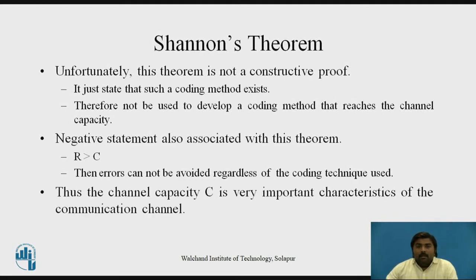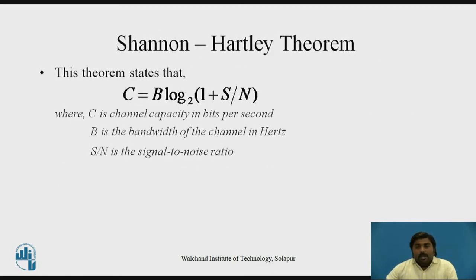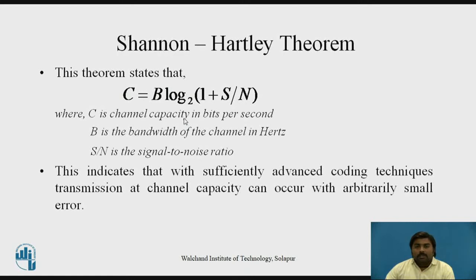To overcome that, we have the Shannon-Hartley Theorem, which states that C equals B log base 2 of (1 + S/N), where C is the channel capacity in bits per second, B is the bandwidth of the channel in hertz, and S/N is the signal-to-noise ratio. This indicates that with sufficiently advanced coding techniques used during transmission, channel capacity can be achieved with arbitrarily small errors in the presence of noise.